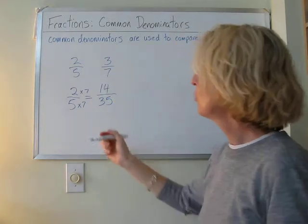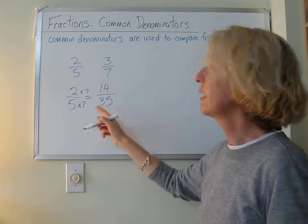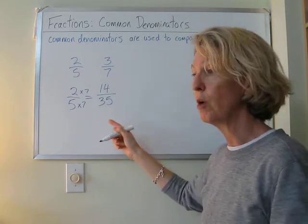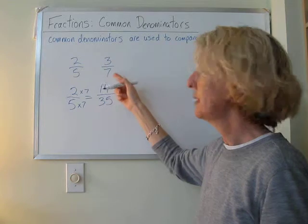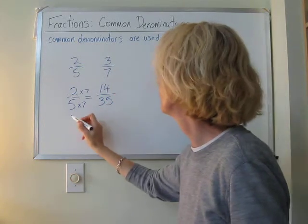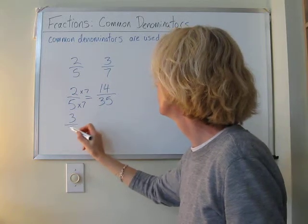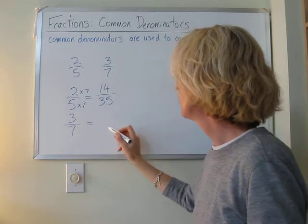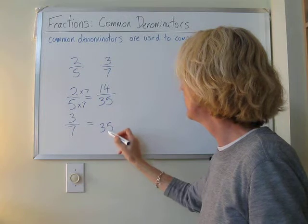Thanks. So, we've written our 2 fifths as an equivalent fraction with a denominator of 35. And because 7 also goes into 35, we're going to do the same thing for our other fraction, 3 sevenths.